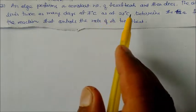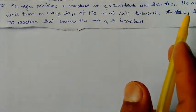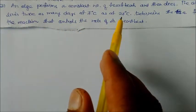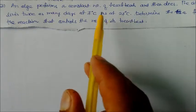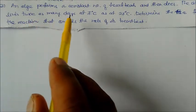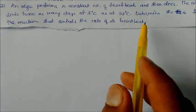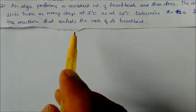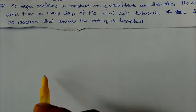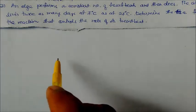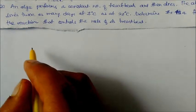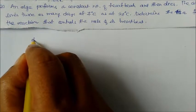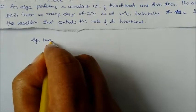Next problem: An alga performs a constant number of heartbeats and then dies. The alga lives twice as many days at 7 degree centigrade as at 27 degree centigrade. Determine the activation energy for the reaction that controls the rate of its heartbeat.